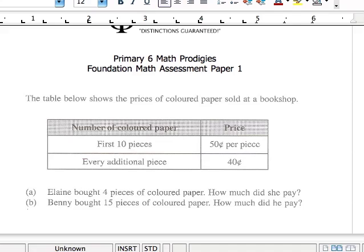Now, for this kind of data analysis questions, I need you to take a very close look at how the graph puts the data across. Okay, in this case, you see, it says number of colored paper for the first 10 pieces. That means every piece that is the first, the second, the third, the fourth, the fifth, the sixth, the seventh, the eighth, the ninth, and the tenth, is going to cost you 50 cents per piece. Not together, but 50 cents each.